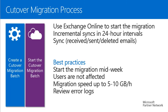As best practice, most customers start the migration phase midweek — for example on Tuesday or Wednesday — because end users are not affected at all. They still have their working on-premise mailboxes and can receive and send emails normally, while the migration process runs in the background. You can expect a maximum throughput of 5 to 10 GB per hour, depending on your internet connection, network throughput, and on-premise server performance.